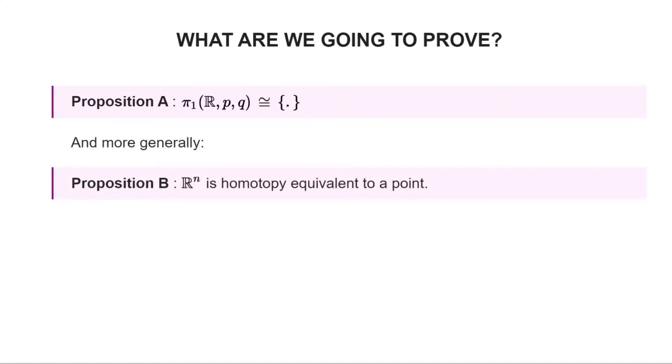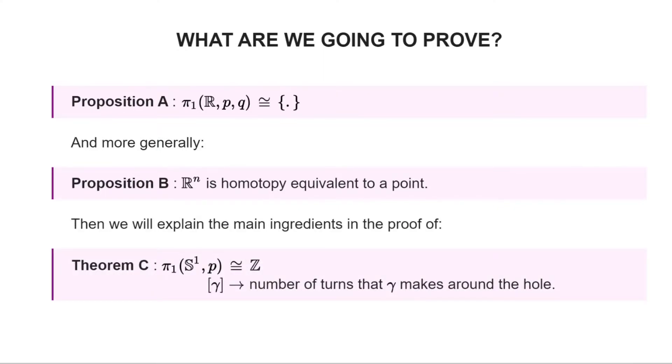Today we are going to prove three statements. Proposition A: π₁(R, p, q) is trivial, that is there's a single equivalence class of paths with given endpoints. This corresponds to the idea that the real line has no holes that could be possibly detected using loops. More generally, Proposition B: R^n is homotopy equivalent to a point. Then we will focus on the circle and prove that given any point P in the circle, there are Z possible homotopy classes for loops based at P. This integer classifying loops up to homotopy is precisely the number of times the loop turns around the hole.